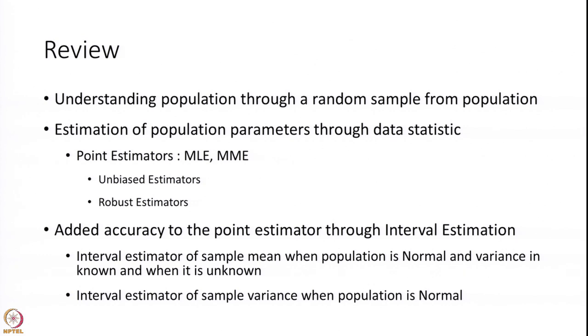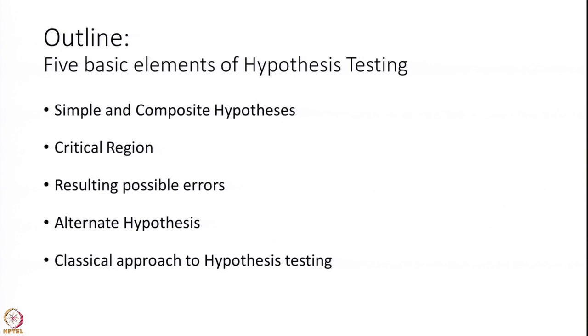We had point estimators, and we added accuracy into it by having an interval estimate. What we want to do now is what is called hypothesis testing. If you have the data and you know that it comes from a certain population, and you also know that that population has a certain mean — let us take an example.